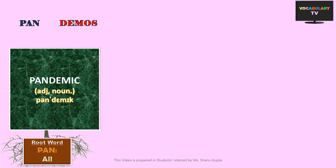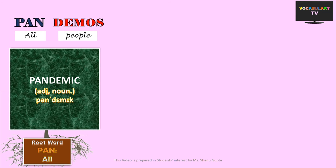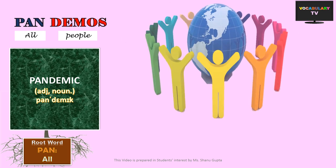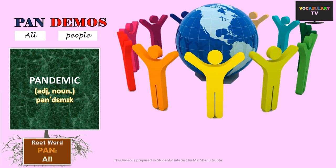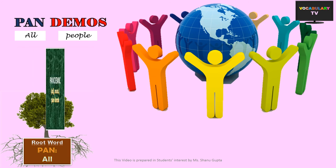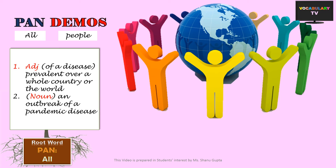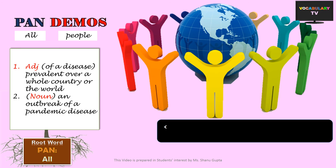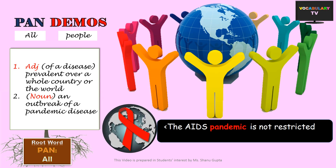The next word is a common one: Pandemic. Since the root demos means 'people,' the word literally means 'all people.' So a pandemic is something that affects all people and is universal. For example, a pandemic disease such as AIDS is a far-reaching epidemic that affects people worldwide and is not restricted to a particular continent or region.